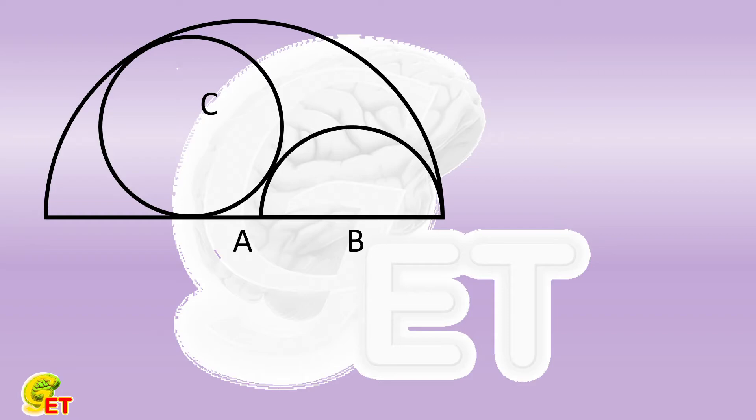The endpoint shared by the small and large semicircles is D. The tangent point between the small circle and the large semicircle arc is E. The tangent point with the diameter is F. And the tangent point between the small circle and the small semicircle is G.